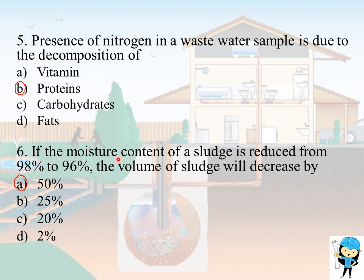If the moisture content of a sludge is reduced from 98% to 96%, the volume of sludge will decrease by 50%.